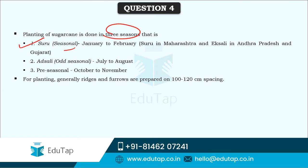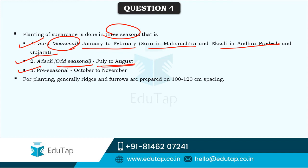Planting of sugarcane is done in three seasons. One is suru, which is the normal season, planted in January to February — called suru in Maharashtra but exali in Andhra Pradesh and Gujarat. Next is adsali, which is the off-season, planted in July to August instead of the main January/February season. The third is pre-seasonal, which is just before the main January-February season, so it is October to November. These seasons are based on location, rainfall received, soil type, and climate of the particular area.